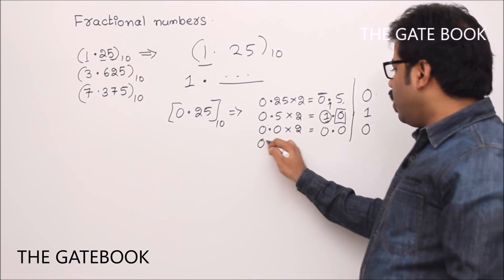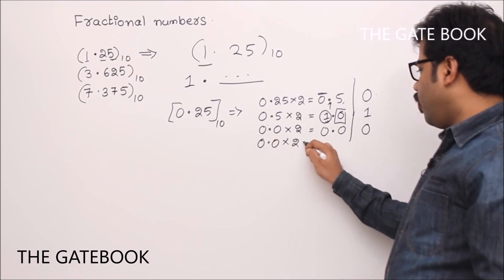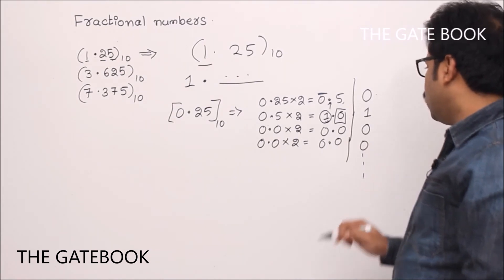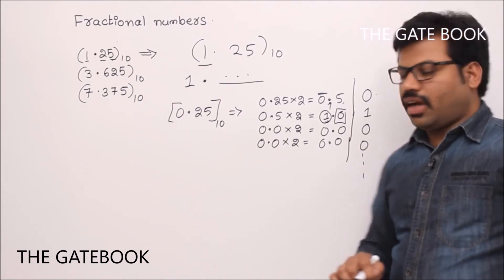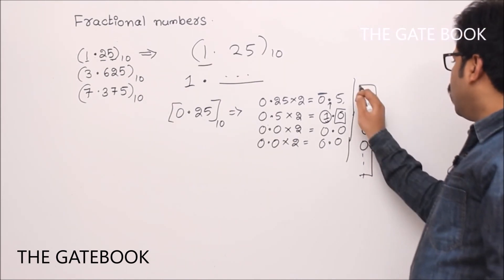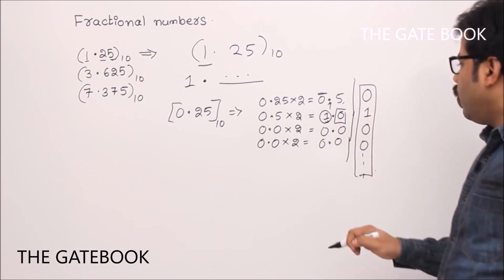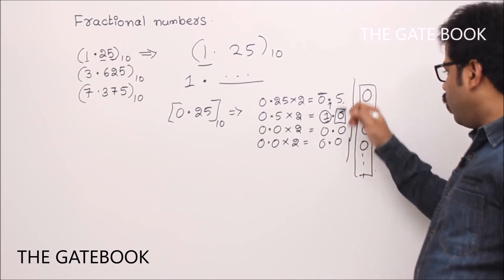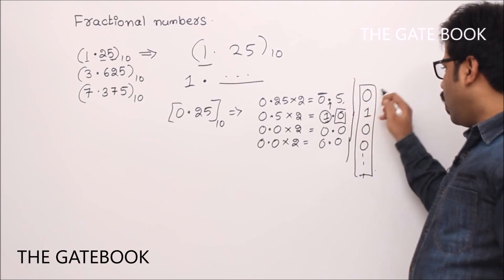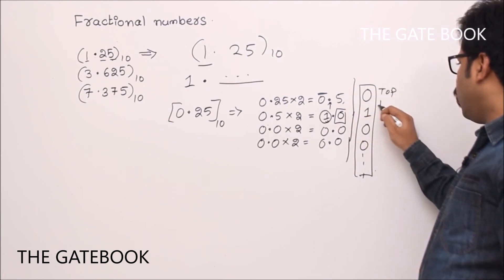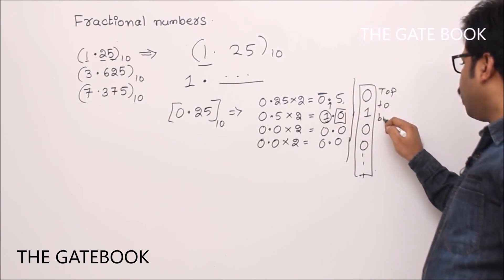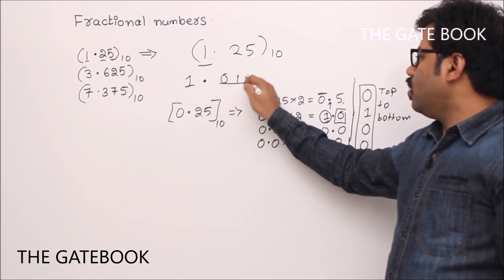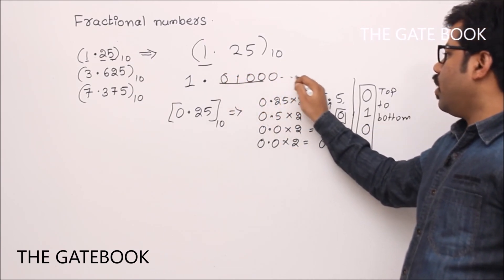We can repeat this process any number of times, and we are going to get 0.0 again and again, giving us 0, 0, 0 and so on. We have to take from top to bottom this time. When you take top to bottom, you get 0, 1, 0, 0, 0, and so on.